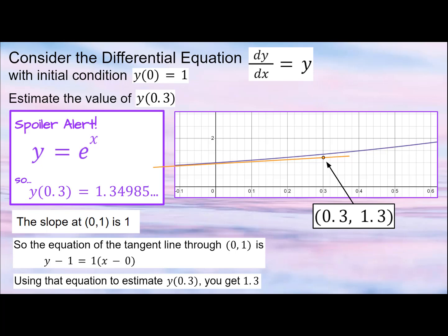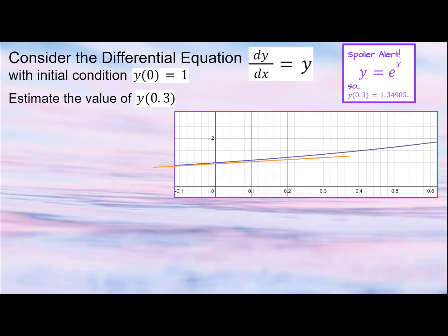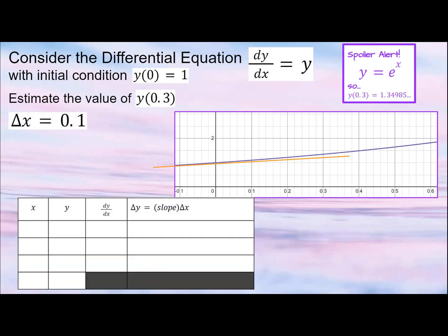But what if we wanted something more precise, or we were estimating a value much further away from (0, 1)? Using Euler's method, we could get an even more accurate estimate. Euler's method uses each step from before to build off of. The change in x for each step should be constant. For this example, we'll use 0.1 and start at our initial value of (0, 1), which we already found the slope for.